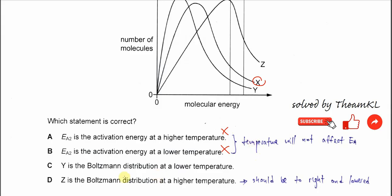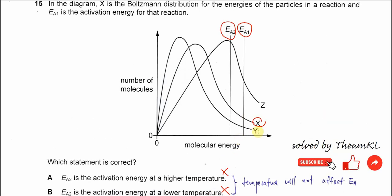Now C and D. Why is the Boltzmann distribution at lower temperature? Lower temperature means the curve will be shifted to the left and higher. So Y is the Boltzmann distribution for the lower temperature, which is true.